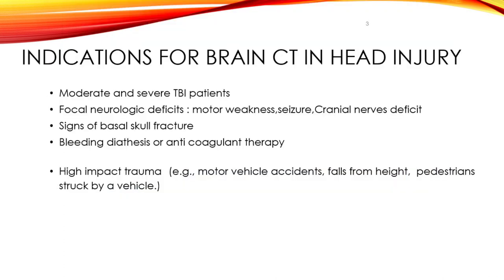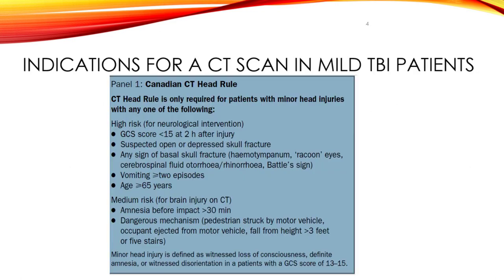All patients with a GCS of 13 or less should be scanned. Those patients having focal neurologic deficit or signs of basal skull fractures should also have a brain CT to detect any intracranial pathology. TBI patients with a history of bleeding diathesis or anticoagulant therapy have a high tendency to develop traumatic intracranial bleeding and should be scanned even though their clinical status is stable. We should be selective when ordering a CT scan for mild TBI patients, as it will be costly and exposes patients to radiation.